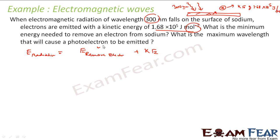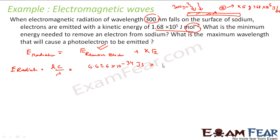We have to find the minimum energy to remove the electron. The energy of radiation we can easily find because we are given the wavelength. So let's find the energy of radiation using the formula E = hc/λ.